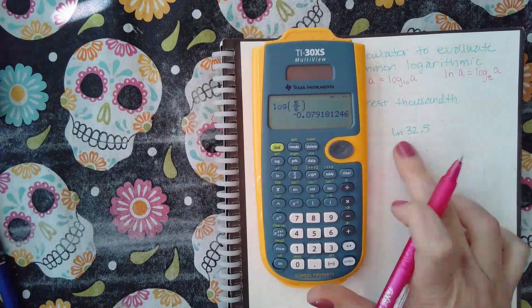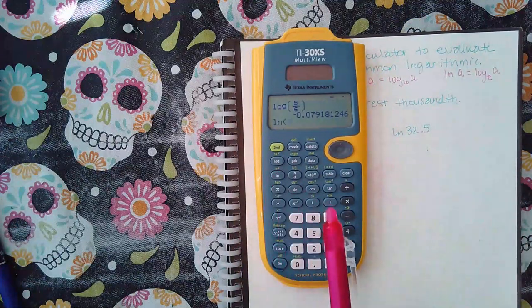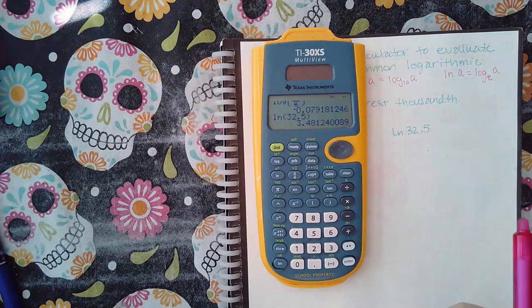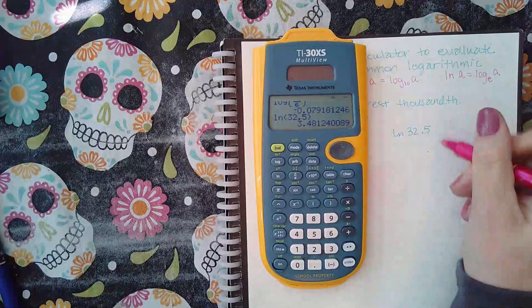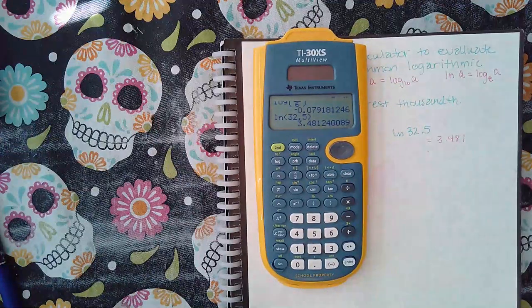The next one here is the ln, so I'm going to hit the ln button, which is this button, and then type in 32.5, hit enter, and round to the nearest thousandth: 3.481.